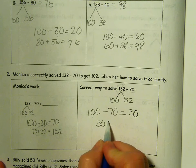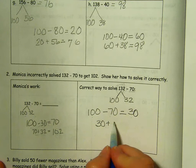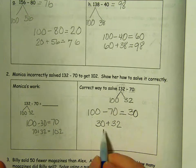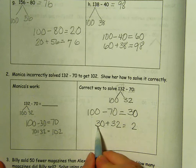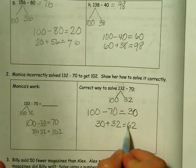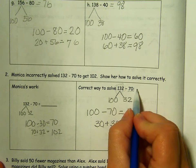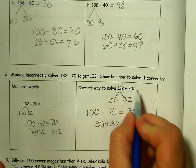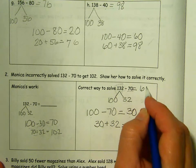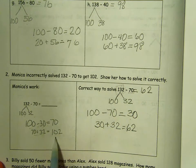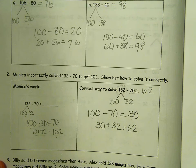100 minus 70 equals 10 tens minus 7 tens is 3 tens or 30. We're going to take that 30 and add back in that other part. So we have 0 and 2 is 2. 3 and 3 is 6. 132 minus 70 equals 62. Not 102. That's a pretty big difference.